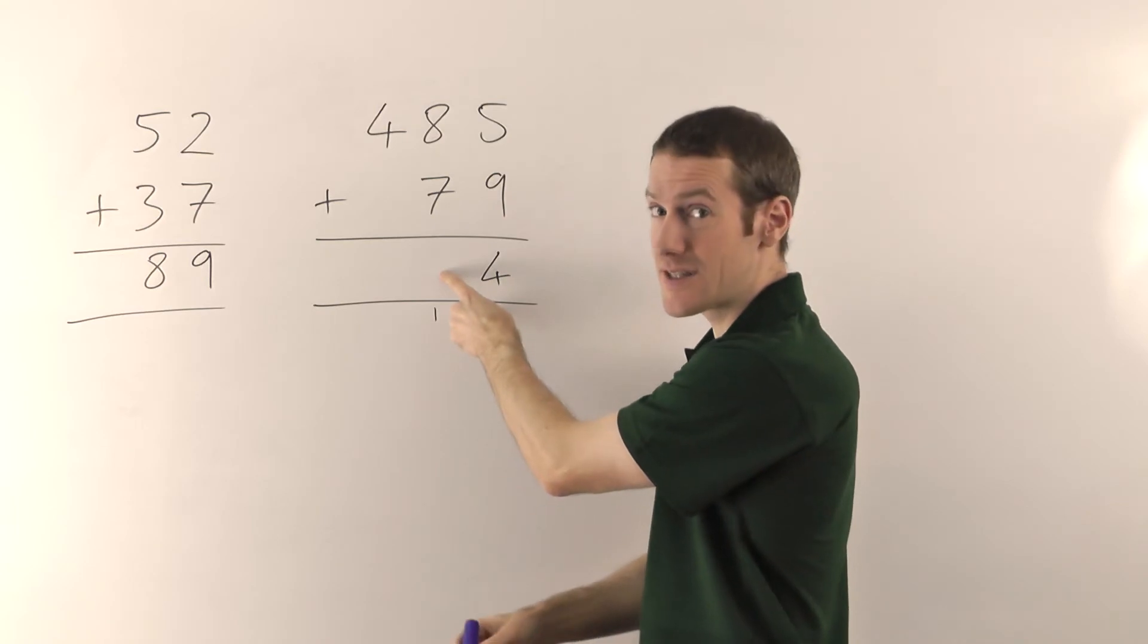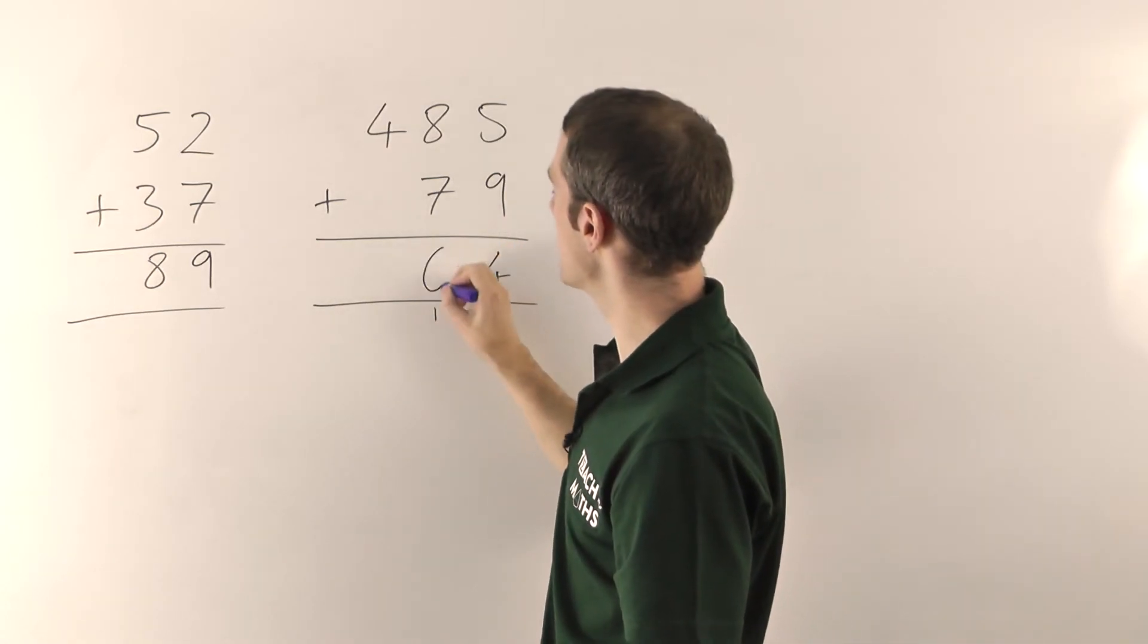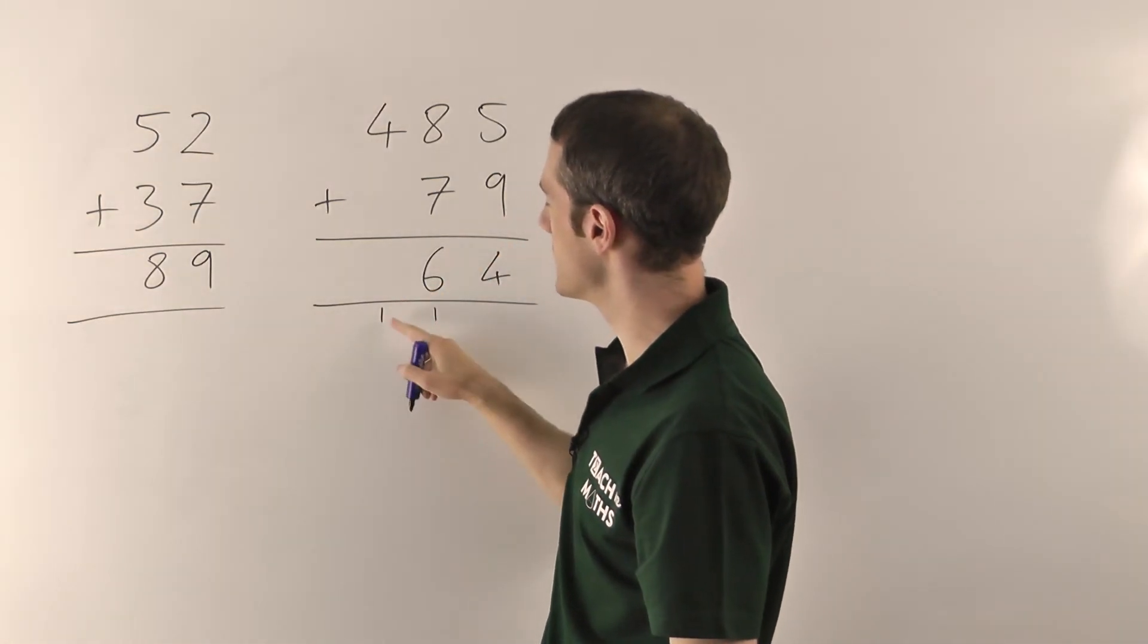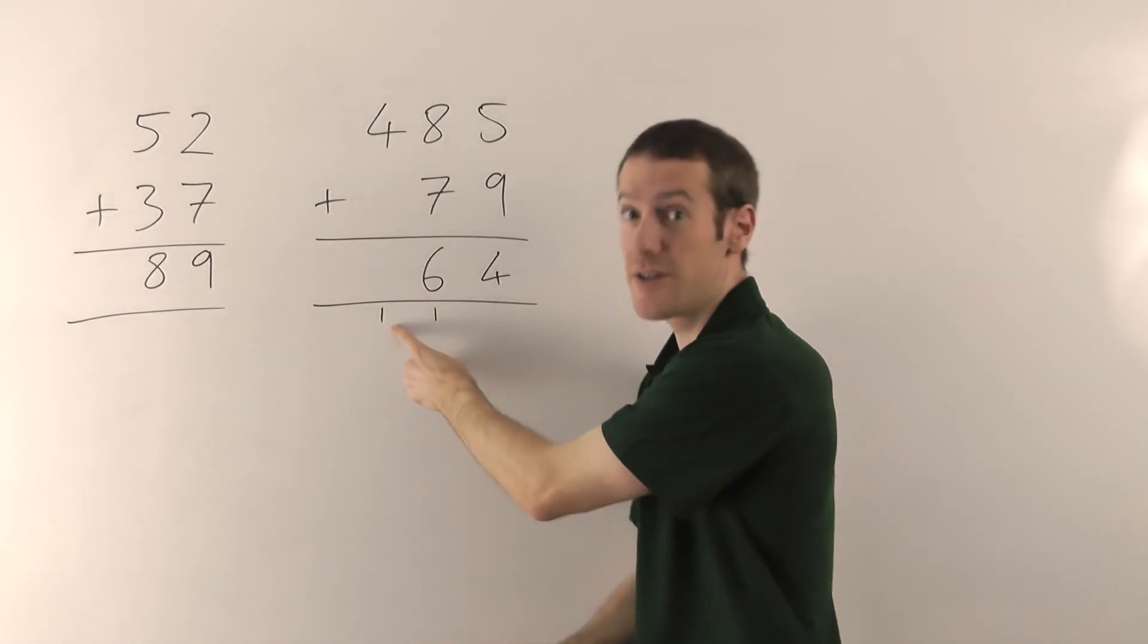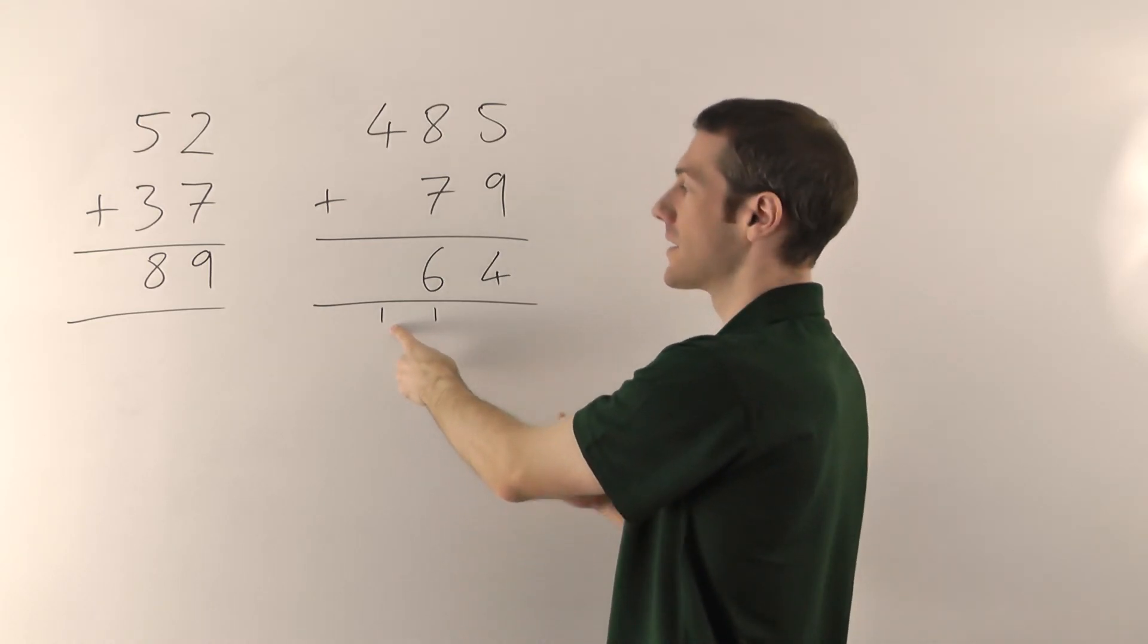Again we can't fit the 16 in there, so the 6 goes there and you have to carry the 1 again to make 16. Then it's 4 plus nothing plus the one you carried, don't forget that one, gives you 5.